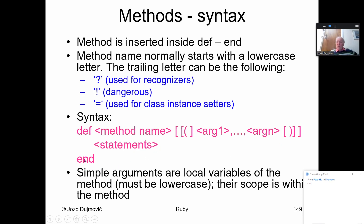Methods have syntax: method_name(argument_list) followed by statements and end. Method naming conventions: question mark suffix for recognizers (e.g., palindrome?), exclamation mark for dangerous in-place modifications, and equals suffix for class instance setters. Parentheses for arguments are optional. Empty parentheses can be omitted when there are no arguments.